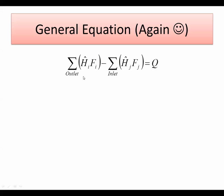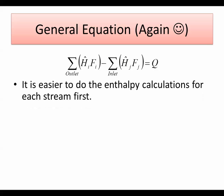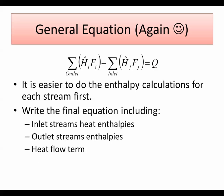We have this equation: the summation of enthalpy of the outlets minus the inlets equals the heat put into the system. The most tedious step is calculating the enthalpy of each stream, which we did last time. Once you have the enthalpy of each stream, you substitute into the equation and get the unknown value. Excel is going to help a lot, especially when you need to calculate temperature, as we'll see in a few minutes.